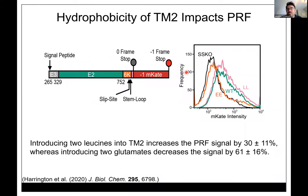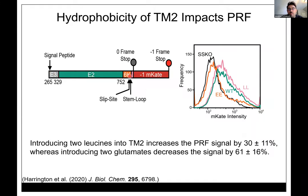To measure frameshifting feedback, we couldn't use a standard dual luciferase reporter because putting something upstream of E3 would interfere with the signal peptide being recognized by SRP. So we made a different reporter: everything native upstream, with a red fluorophore installed in the minus-one frame downstream of the slip site. If frameshifting occurs, you produce a red fluorophore. We also placed an IRES and GFP downstream so we could gate on expressing cells and quantify the red frameshift product by flow cytometry.